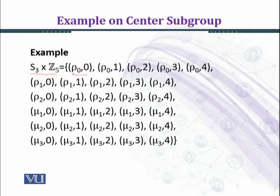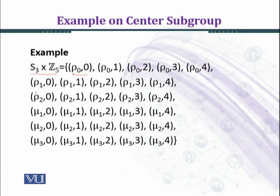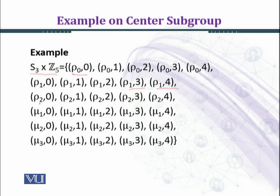The identity element will be of the form (ρ0, 0̄). By fixing the first coordinate as ρ0 and varying the second coordinate through all elements of Z5, we get five elements: (ρ0, 0̄), (ρ0, 1̄), (ρ0, 2̄), (ρ0, 3̄), (ρ0, 4̄). Similarly, fixing the first coordinate as ρ1 gives: (ρ1, 0̄), (ρ1, 1̄), (ρ1, 2̄), (ρ1, 3̄), (ρ1, 4̄).